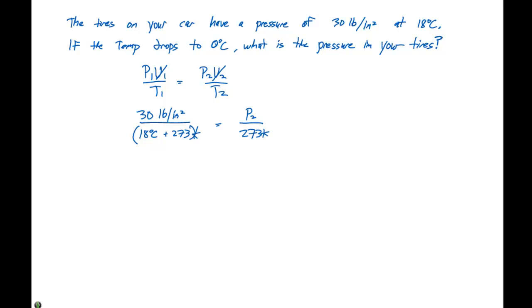We can do our cross multiplication here. We find that P2 times 18 degrees Celsius plus 273 Kelvin is going to equal 30 pounds per square inch times 273 Kelvin. If we divide 18 plus 273 Kelvin from both sides, we find that P2 is equal to 28 pounds per square inch.